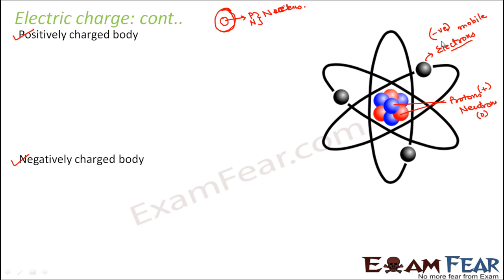It is very important to understand this because on the basis of this we will understand the entire concept of electric charge. When do we say a body is positively charged? Under any normal situation, when a body is neutral, the net charge of the body is zero — equal numbers of protons and electrons. If an object has 10 protons and 5 electrons, the body overall will have a positive charge because it has more positively charged particles. If an object has 10 electrons and 5 protons, the body will be negatively charged. Neutrons are neutral and do not carry any charge.